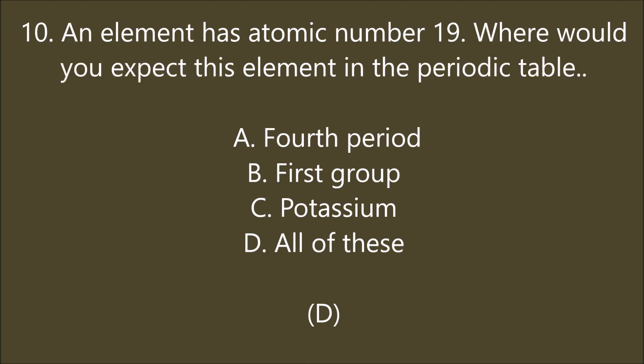An element has atomic number 19. Where would you place this element in the periodic table? Fourth period, first group, potassium, or all of these. D is the right answer — all of these.